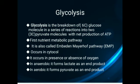Glycolysis is the breakdown of a glucose molecule in a series of reactions into two pyruvate molecules, with the net production of ATP. Glycolysis is the first nutrient metabolic pathway. It is also called the Embden–Meyerhof pathway. It occurs in the cytosol and it occurs in the presence or absence of oxygen.